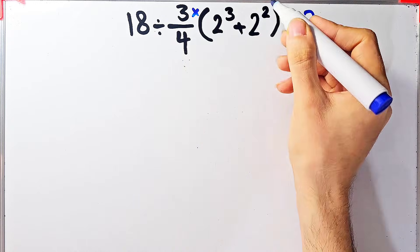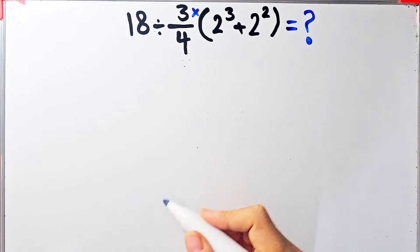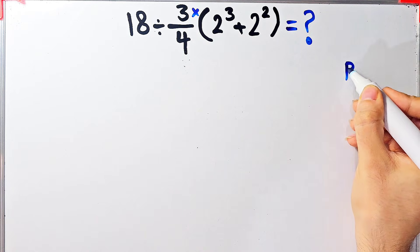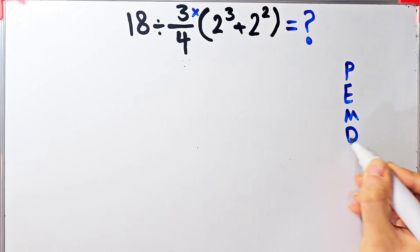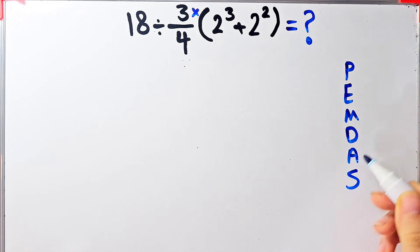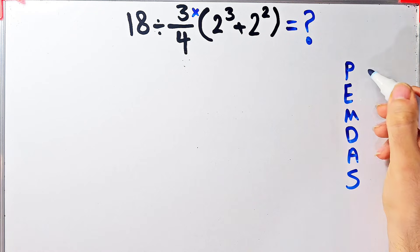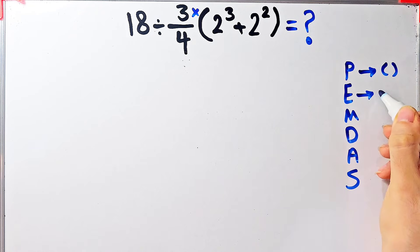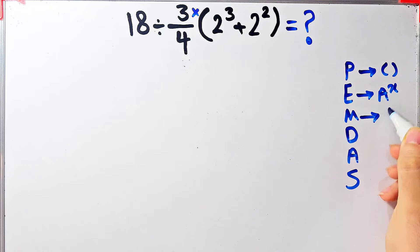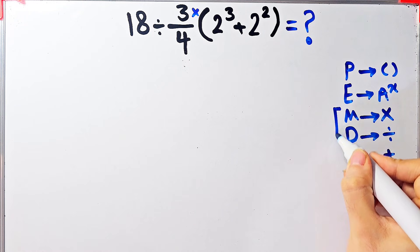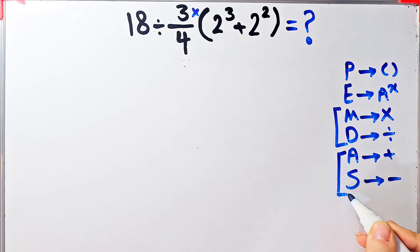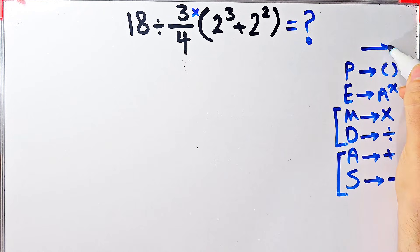In this question we have division, multiplication, parentheses, exponent, and addition. To solve this question we need to follow the PEMDAS rule. PEMDAS shows the priority of mathematical operations — if you don't follow this rule you get the wrong answer. P stands for Parenthesis, E for Exponent, M for Multiplication, D for Division, A for Addition, and S for Subtraction. Multiplication and division are the same level of priority, and so are addition and subtraction. When both appear, we start from the left.